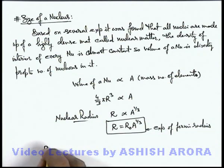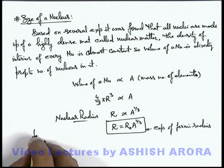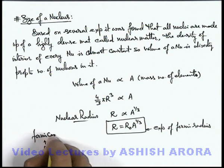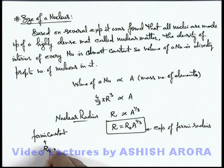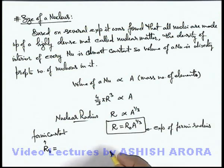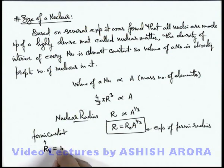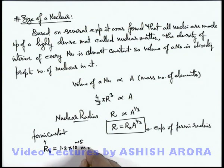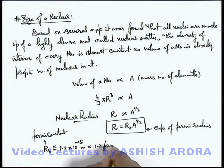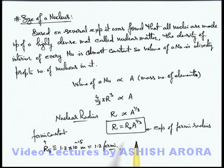Here, r₀ is called the Fermi constant, which gives us an idea about the average radii of a nucleus in terms of its mass number. We can attach a proportionality constant r₀, so r = r₀ × A^(1/3). The numerical value of r₀ is 1.2 × 10⁻¹⁵ meters, which is approximately 1.2 femtometers. This is what we use for calculation of average nuclear radii of any element whose mass number is known.